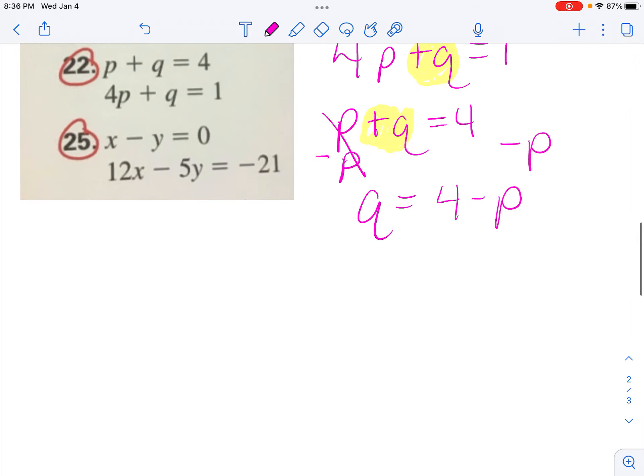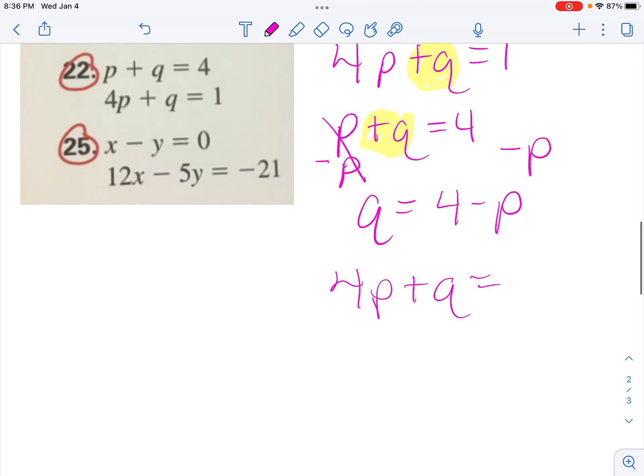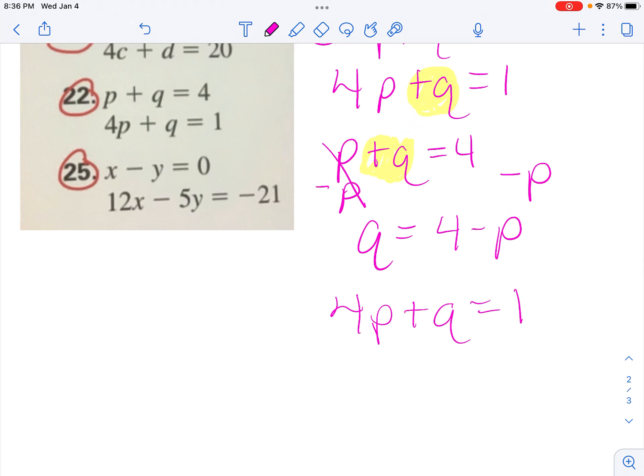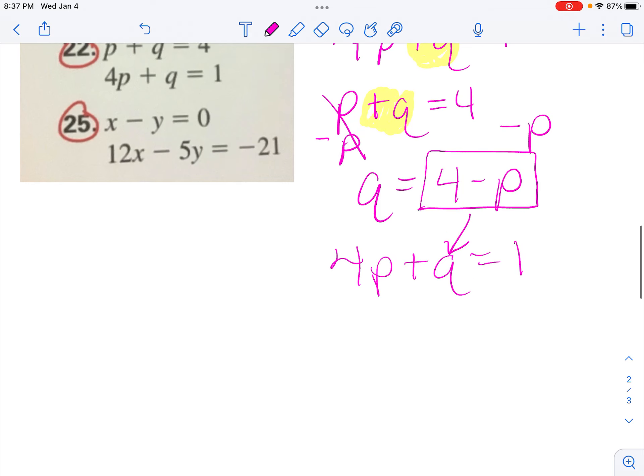So I know that in this second equation of 4p plus q equals 1, everywhere there's a q, I'm going to substitute it with the 4 minus p. So I'm going to bring down my 4p, then instead of plus q, I'm going to have plus 4 minus p equals 1.